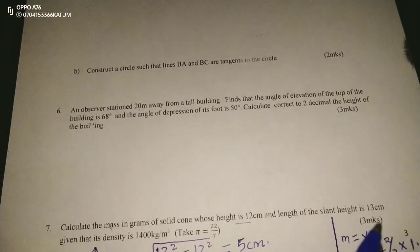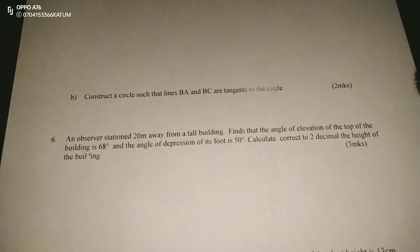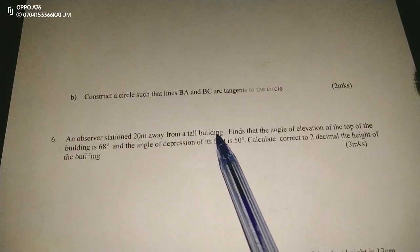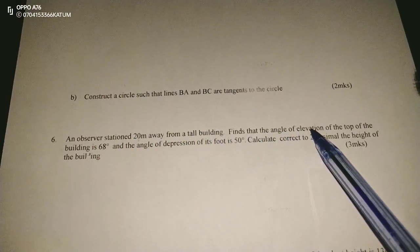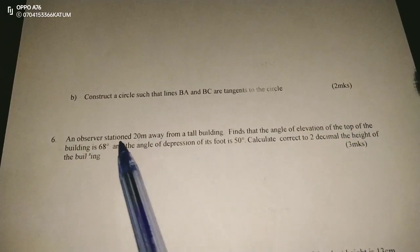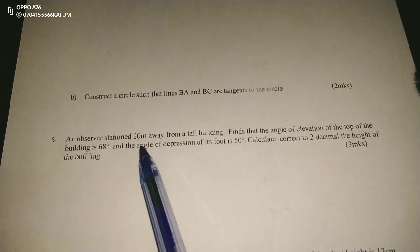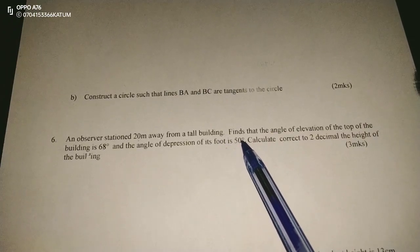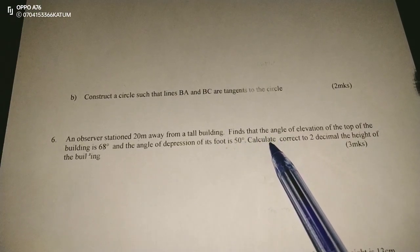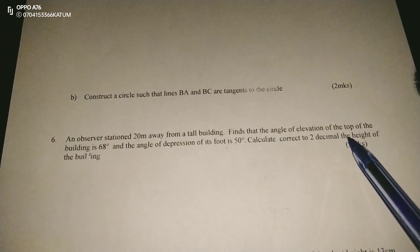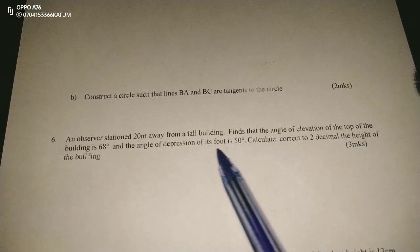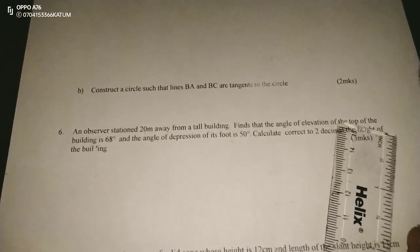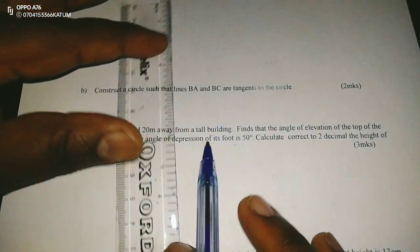and also the application of trigonometry in the calculation of distances. An observer stationed 20 meters away from a tall building finds that the angle of elevation of the top of the building is 68 degrees and the angle of depression of its foot is 50 degrees. Calculate, correct to two decimal places, the height of the building. Therefore, this information can only be handled when it has been sketched.